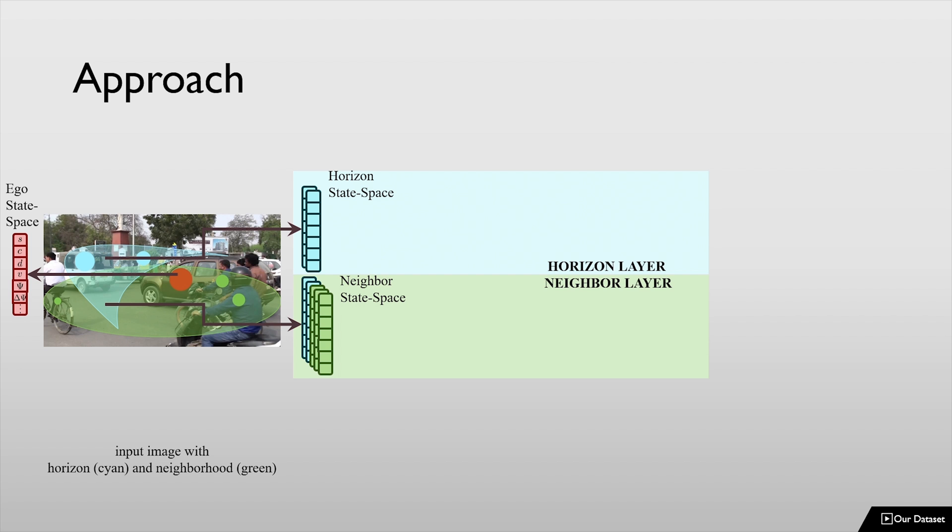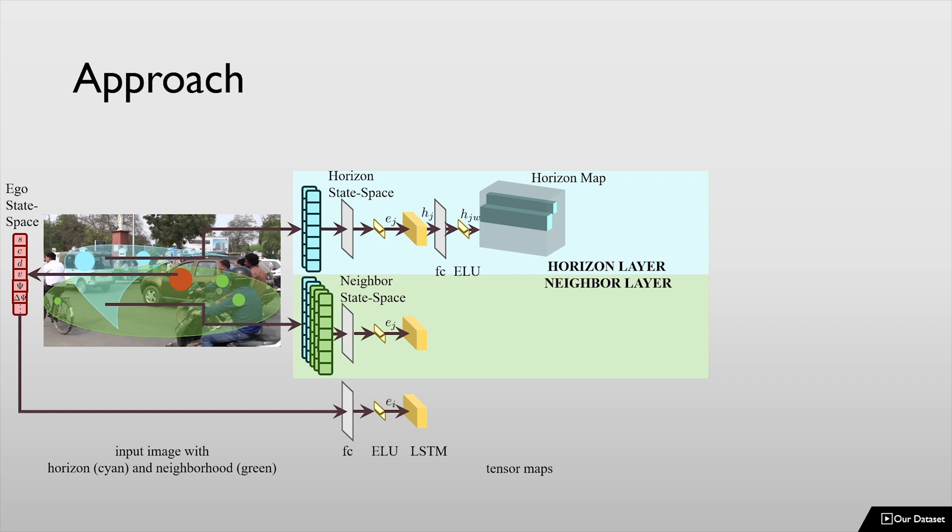The embeddings from each layer are passed through a single-layered LSTM as input. The output of the LSTMs are hidden state vectors. The hidden state vector of the horizon-based weighted interaction goes through an additional linear layer followed by an ELU non-linearity. The hidden vectors of the horizon and neighborhood layers are pooled into maps called the horizon map and the neighborhood map.